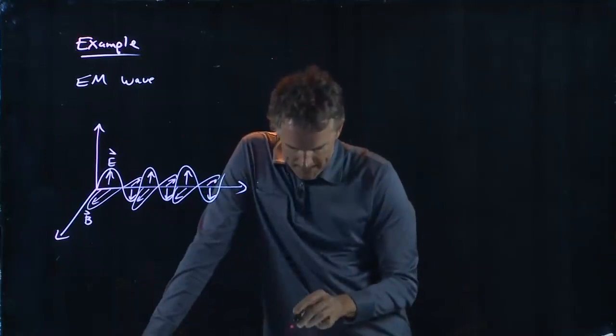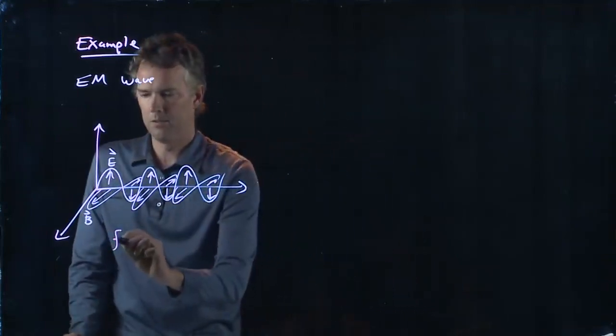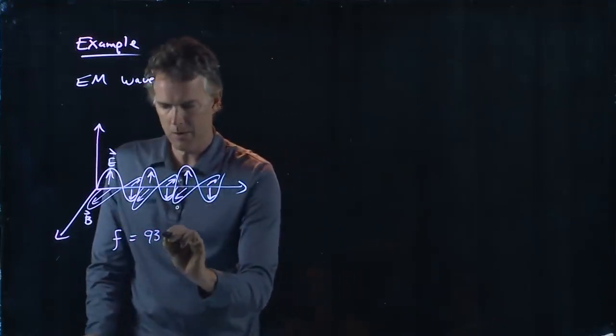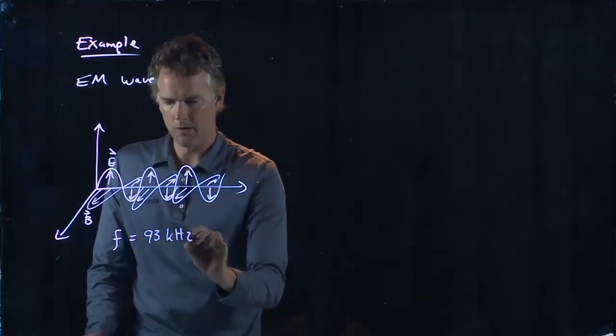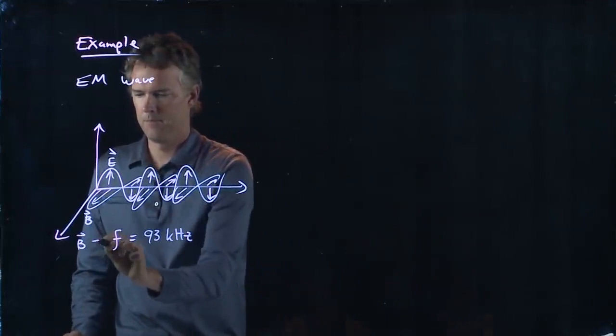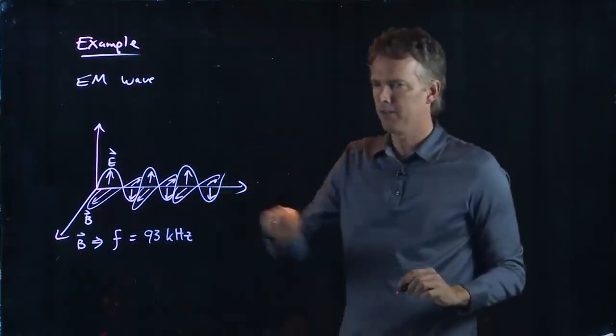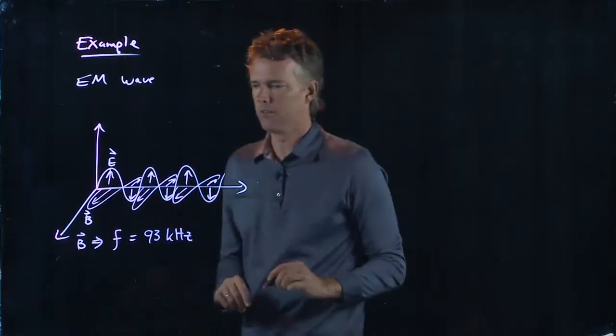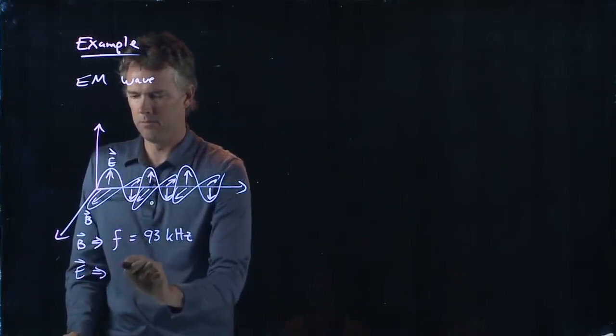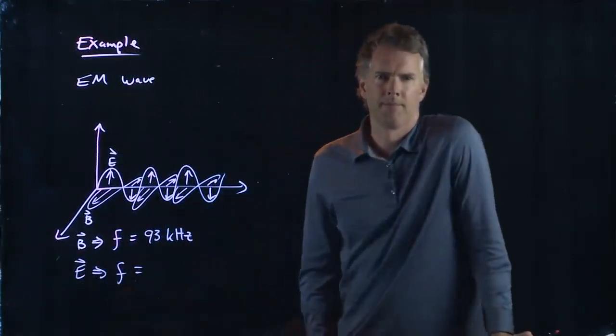So the first thing they tell us is the B field oscillates with a frequency of 93 kilohertz. So if the B field is oscillating at 93 kilohertz, what do you think the frequency of the electric field is? What do you think?